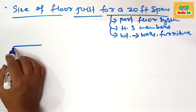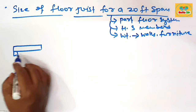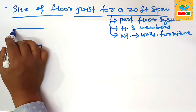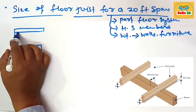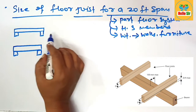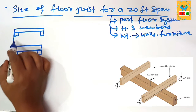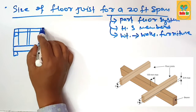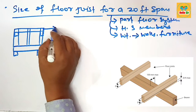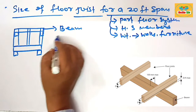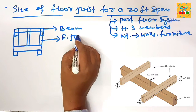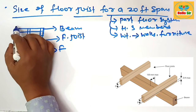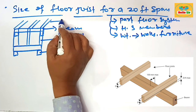First, we make a rough diagram to understand the floor system. Suppose this beam is put on the foundation, with another beam structure running parallel to it. This is the foundation, and the floor joist runs parallel to this beam, connecting the beam structures. This is your floor joist, that is the foundation, and these are the wall studs.